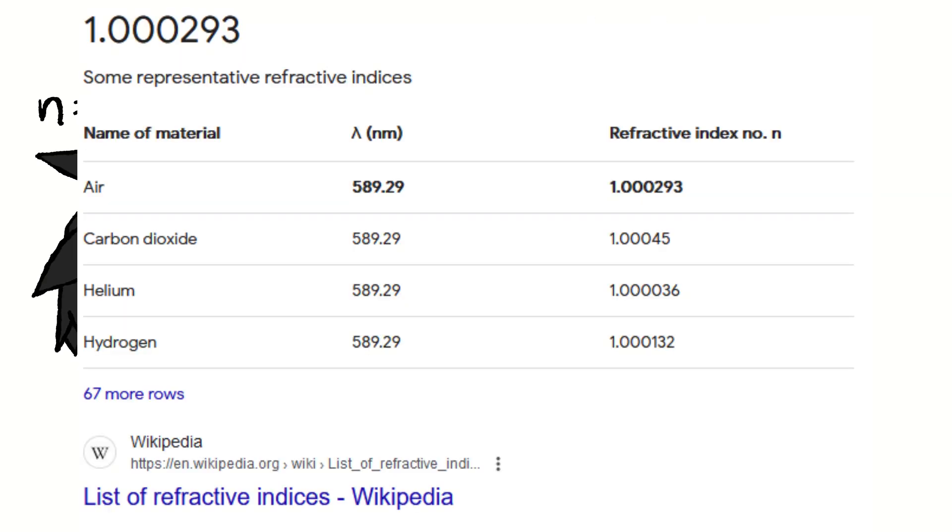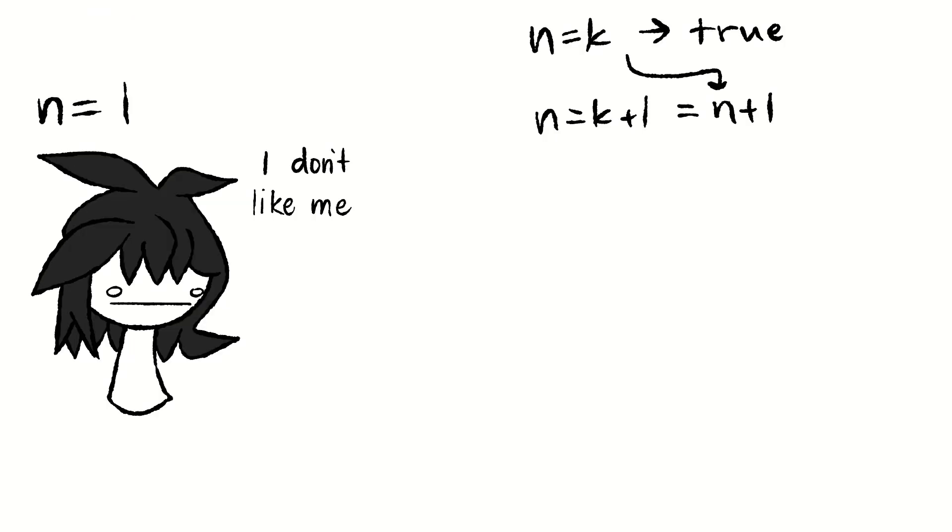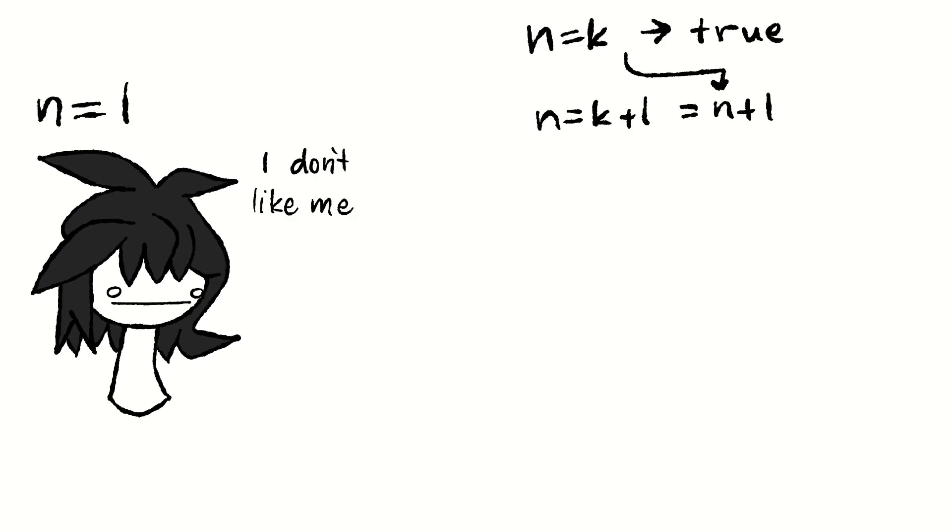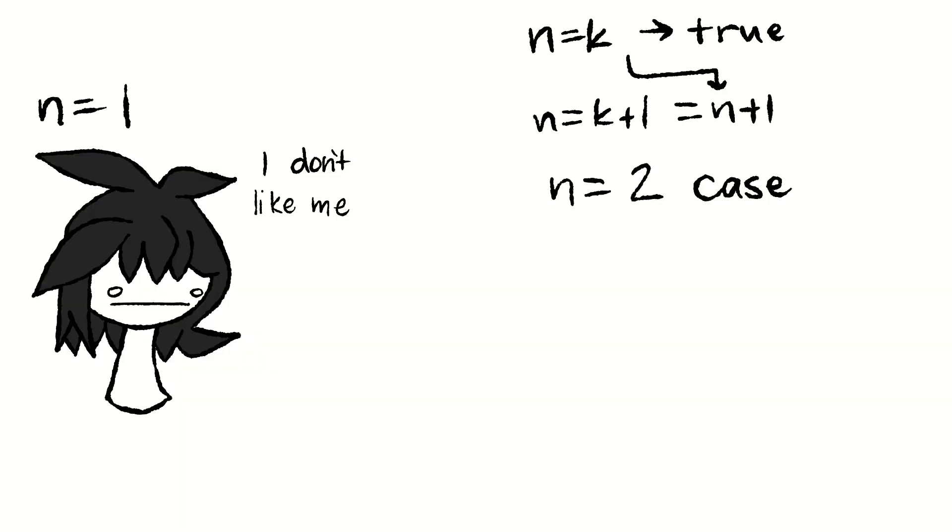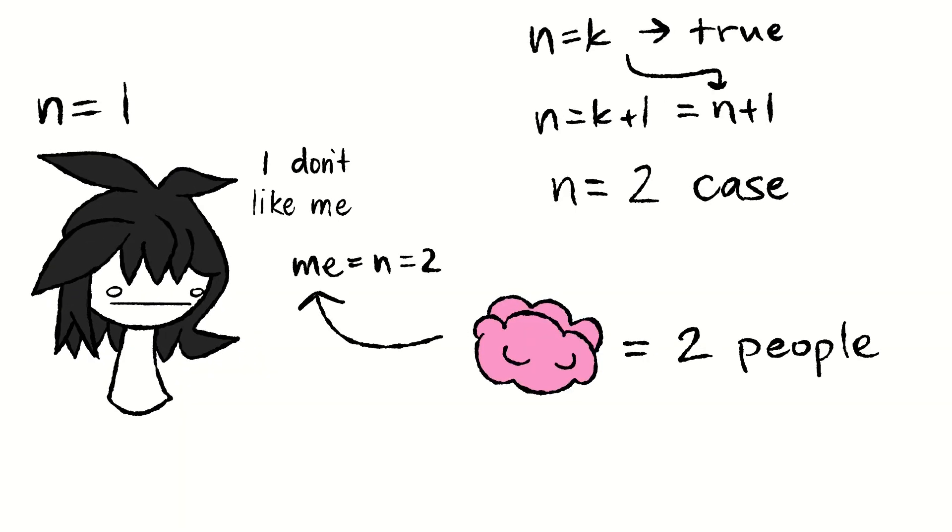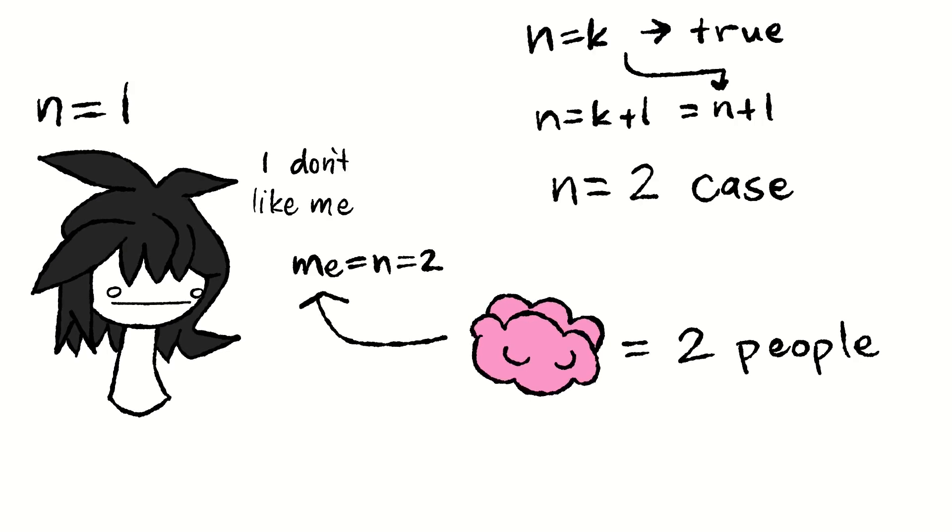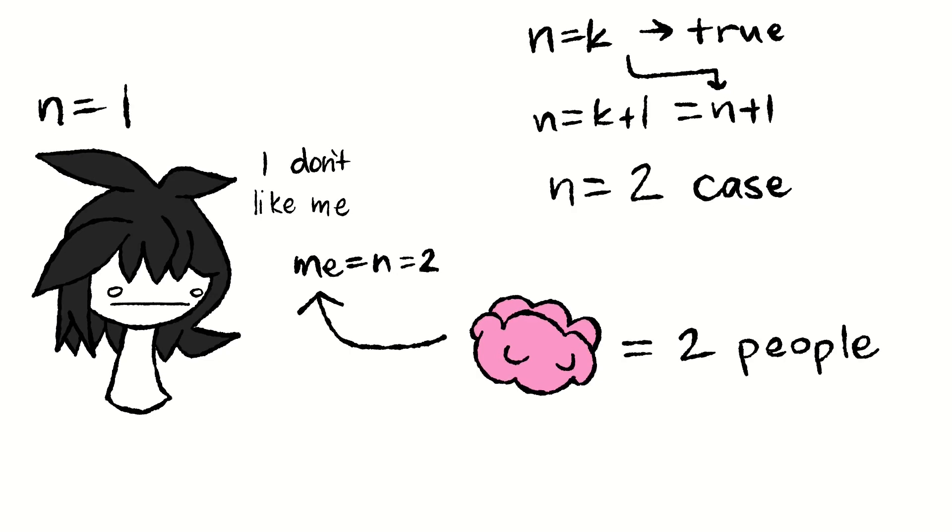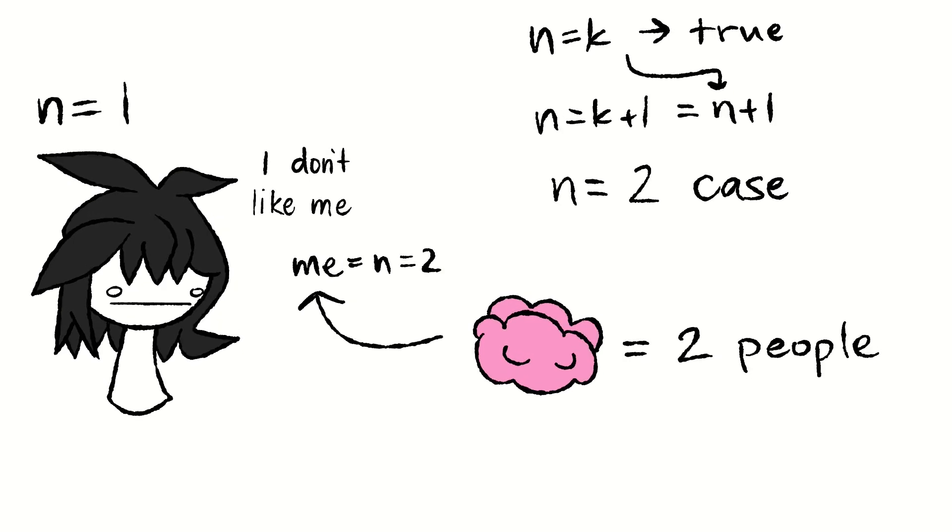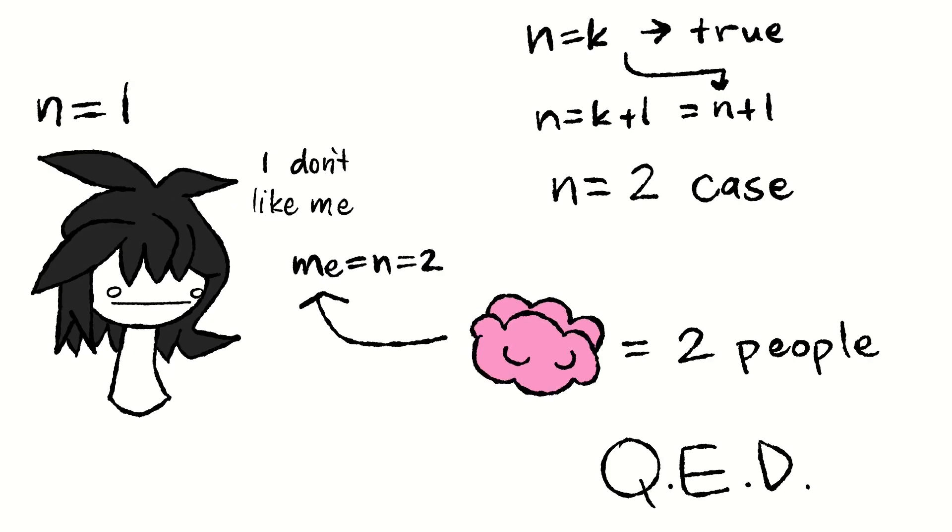In the n equals 1 case, I am heterosexual, and I've expressed how I feel about myself in the beginning of the video. In the n plus 1 case, the index of refraction of air is basically 1, so using the fundamental theorem of engineering, we would need to consider the 2th case. According to some random YouTube videos, 1 brain is actually 2, so since me is 2, the 2th case is already solved, and by extension, the n plus 1 case. Meaning we have proved by induction that all heterosexuals don't like themselves. And we can go ahead and slap a QED on that bad boy and move on.